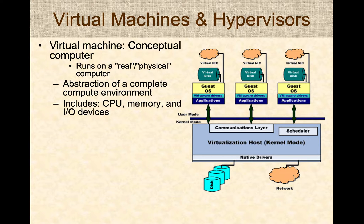This abstraction includes CPU, memory, input-output devices, networking hardware, keyboard, mice, or whatever hardware you want to emulate. These virtual machines come as an entire package that can be used to run a completely different operating system and run different programs on top of that virtual machine.